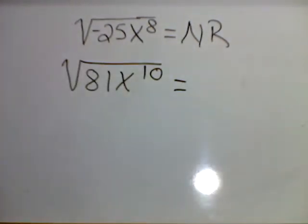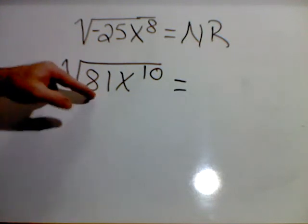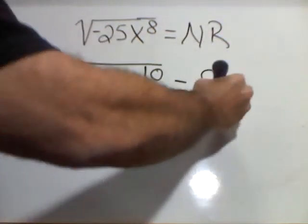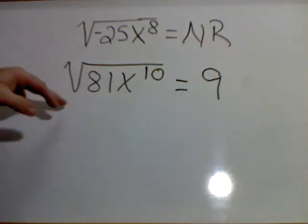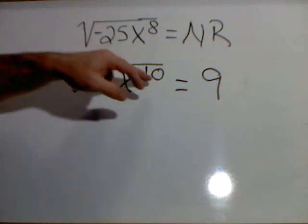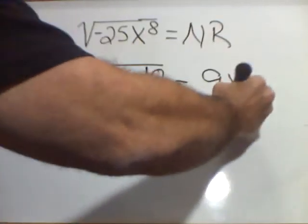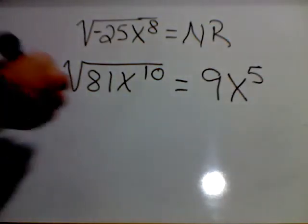Square root of 81 x to the 10th. First, that's a 2 there. Now, the number times itself twice that gives me 81 is 9. Therefore, the square root of 81 is 9. Now, x's, I'm going to take 10, divide by 2, and get 5. Final problem.